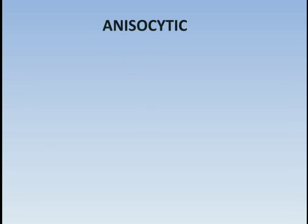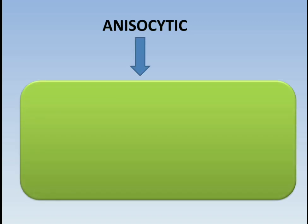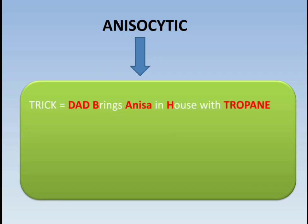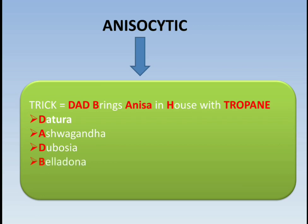Next is anisocytic stomata. The trick is 'Dad brings Anisha in house with tropane.' Anisha resembles anisocytic. D denotes datura, A denotes ashwagandha, D denotes Duboisia, B denotes belladonna, and H denotes henbane.